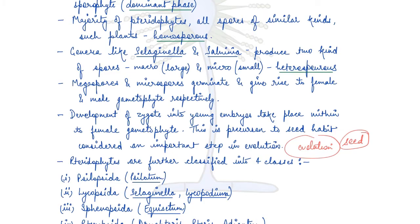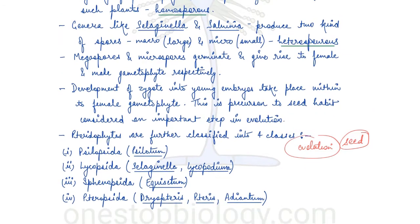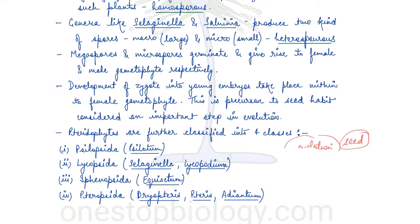Pteridophytes are classified into four classes: Psilopsida, Lycopsida, Sphenopsida and Pteropsida. As per NCERT, you just need to remember these four classes. After finishing NCERT, we will deep dive into details as per other books. There are two structures shown — Selaginella and Equisetum.